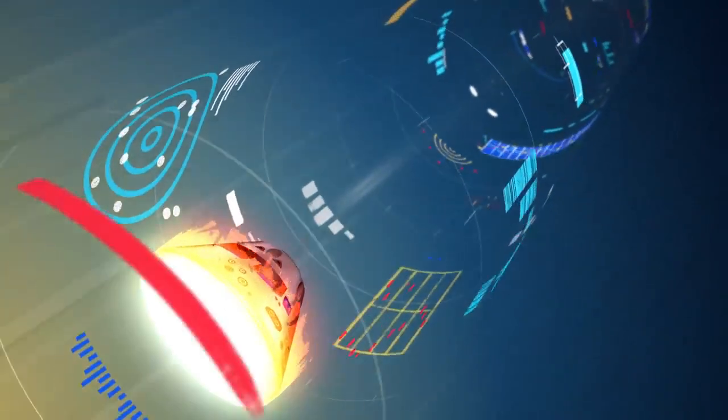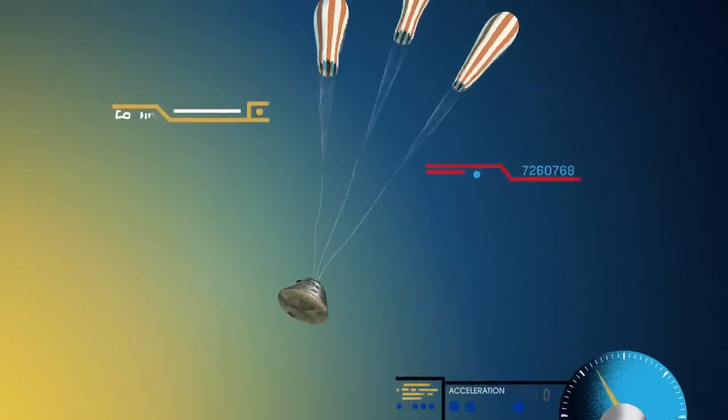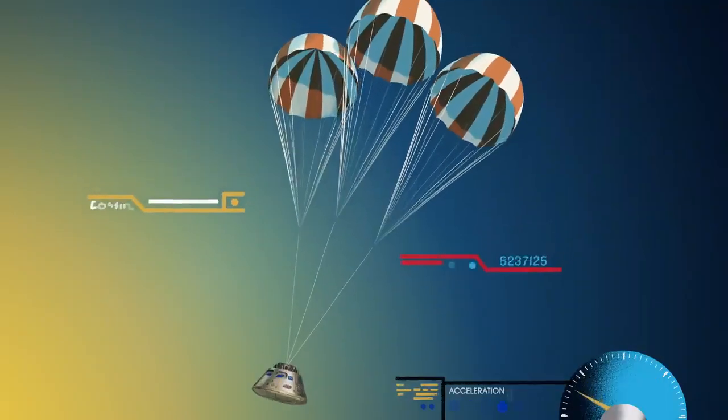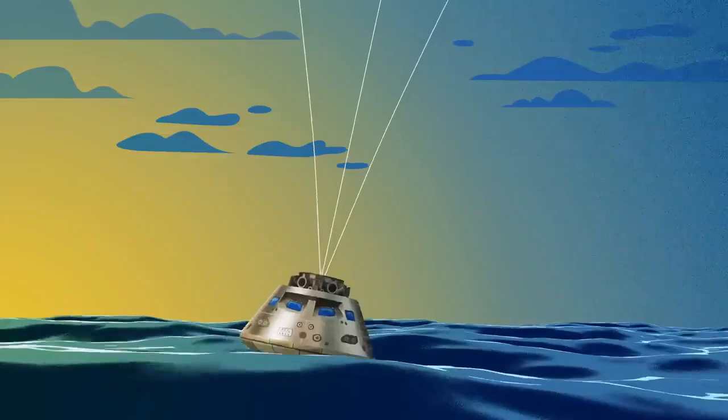With the Orion now at just 300 miles per hour, a series of parachutes uniquely tested and produced for this moment deploy, decelerating the craft to just 20 miles per hour for splashdown.